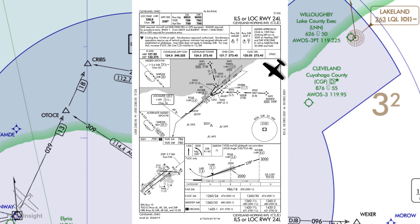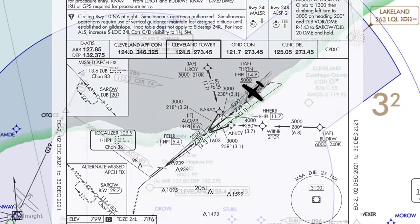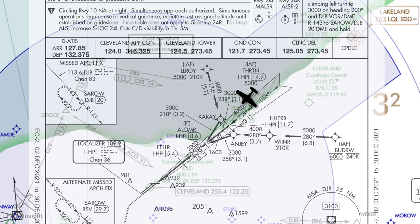Just because it's a visual approach doesn't mean we're VFR and our IFR is cancelled. We're still under IFR, so the cloud clearance requirements for whatever airspace we're in still apply. Even though we're not flying the ILS, it's a good idea to load up the procedure into our instruments. The FAA recommends using available nav aids like this for lateral and vertical guidance, as well as to ensure we're lining up with the right runway at the right airport.